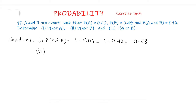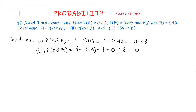Now Part 2 — probability of not B is equal to 1 minus probability of B. Probability of B is 0.48, so this is equal to 1 minus 0.48 equal to 0.52. So the answer to Part 2 is 0.52.